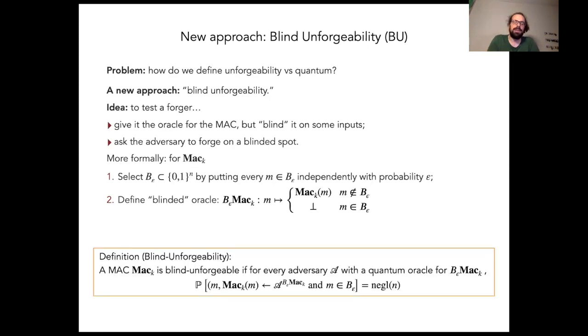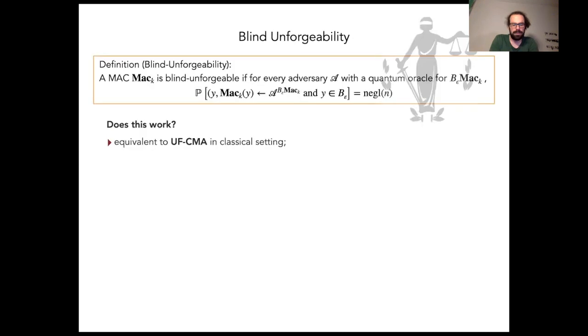The definition is now as follows. A message authentication code is called blind unforgeable if no adversary can output a valid message tag pair with the message being in the blinding set when provided with the blinded oracle. So we have come up with a candidate replacement. Let's check whether it actually works.